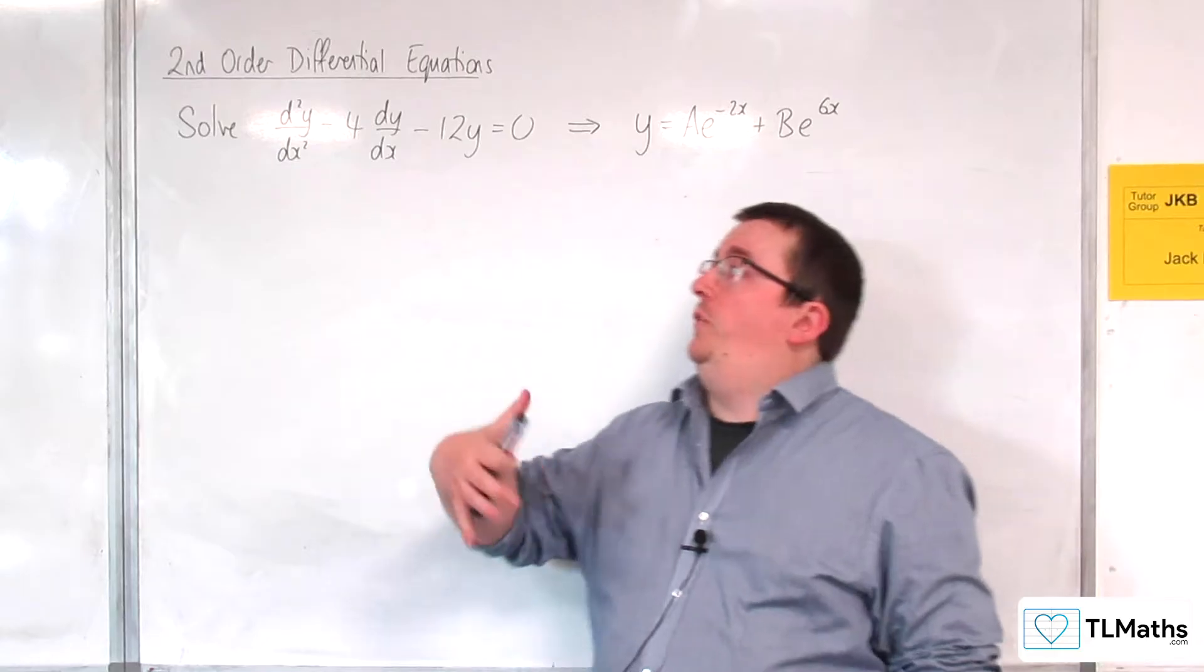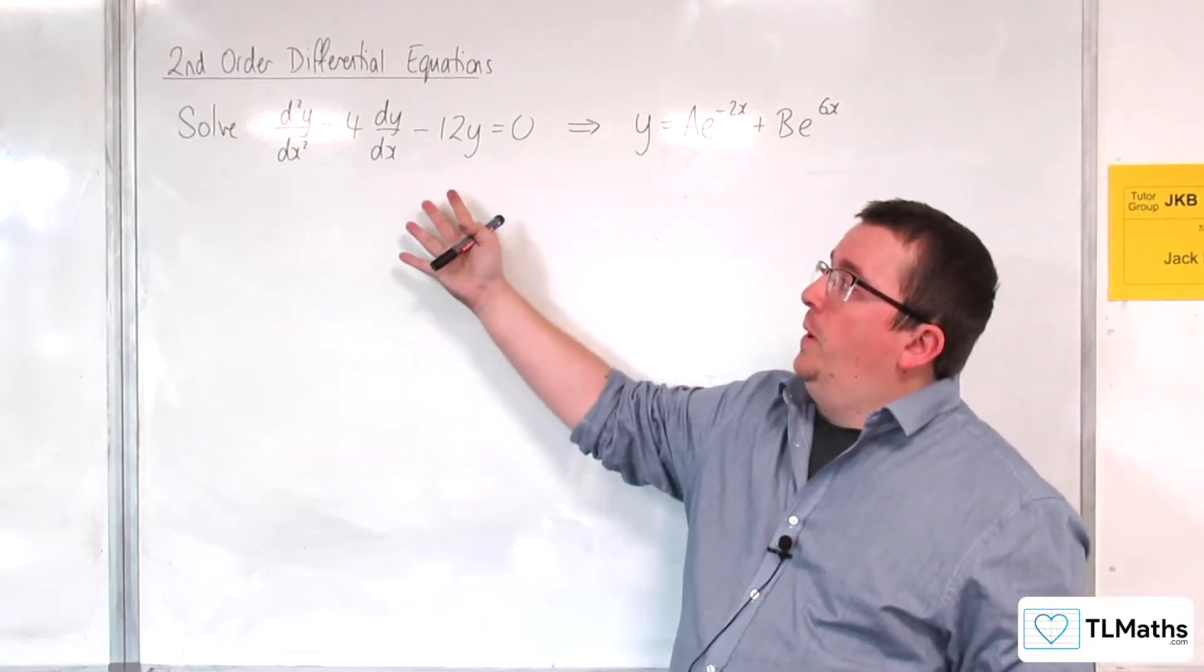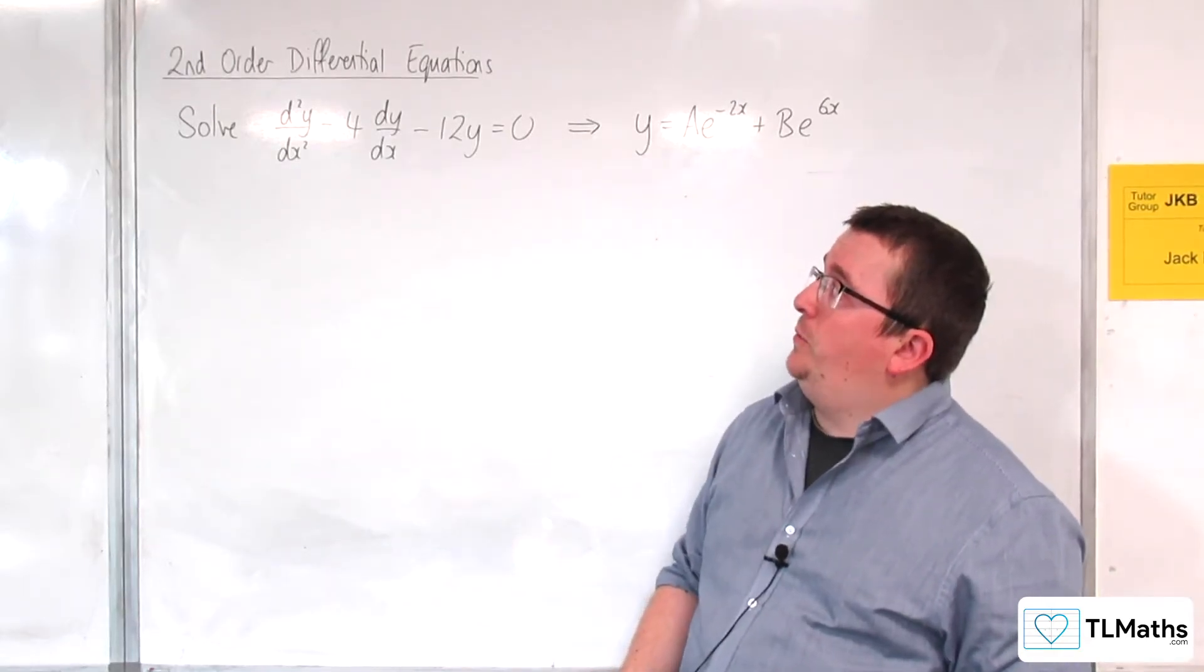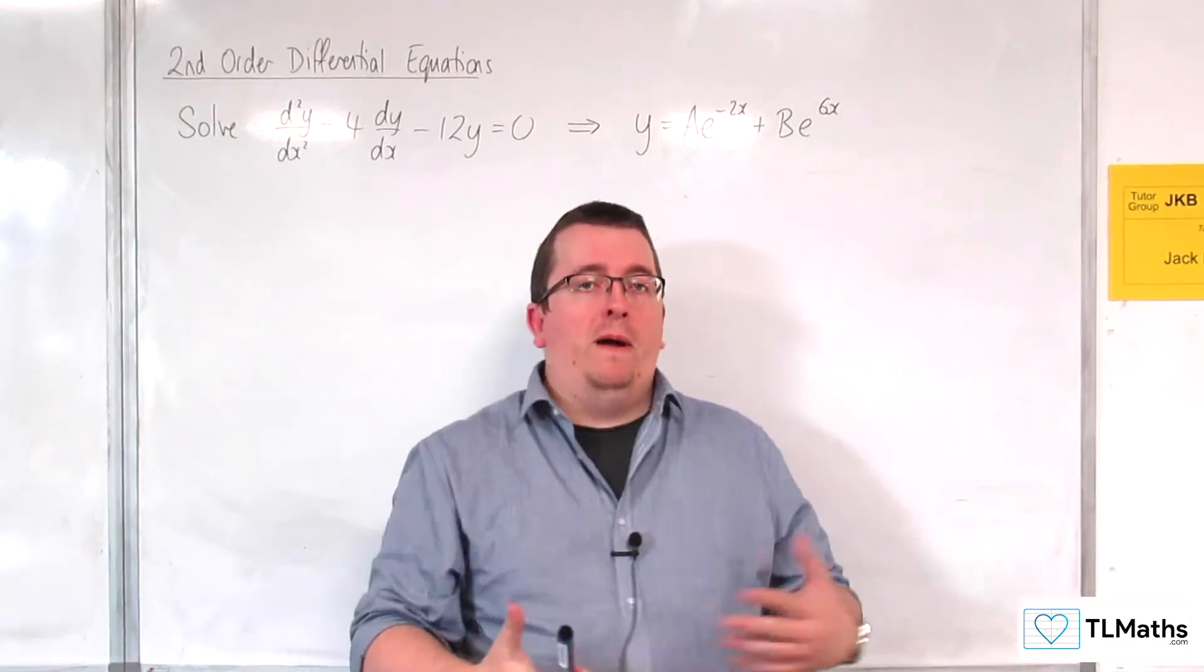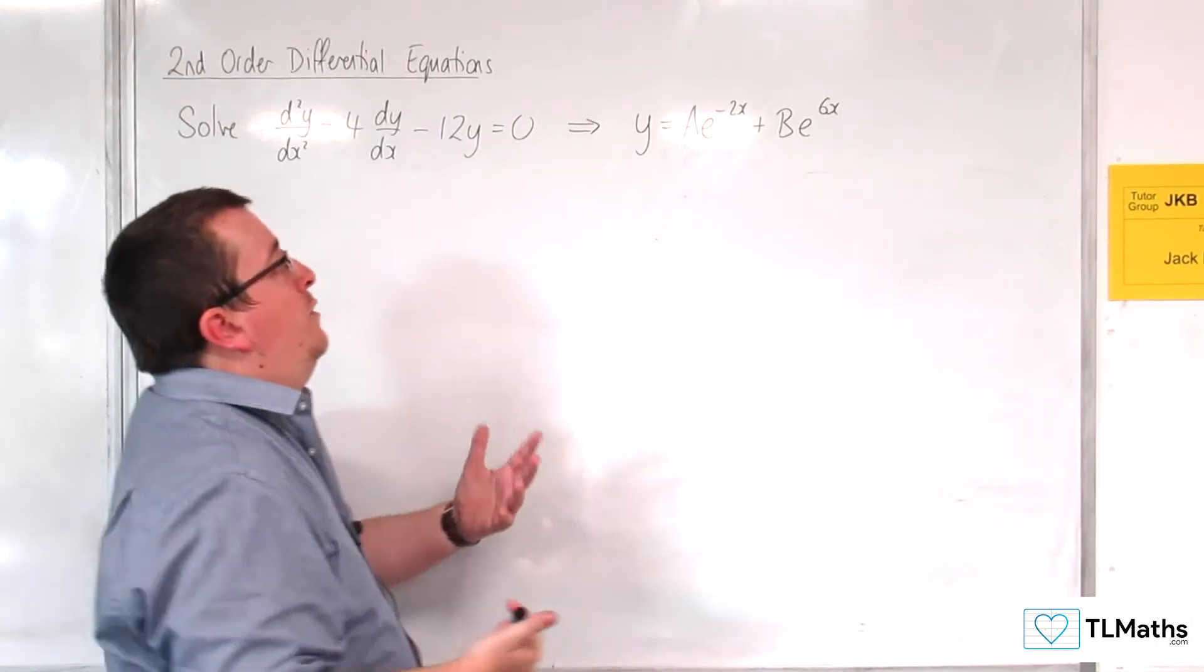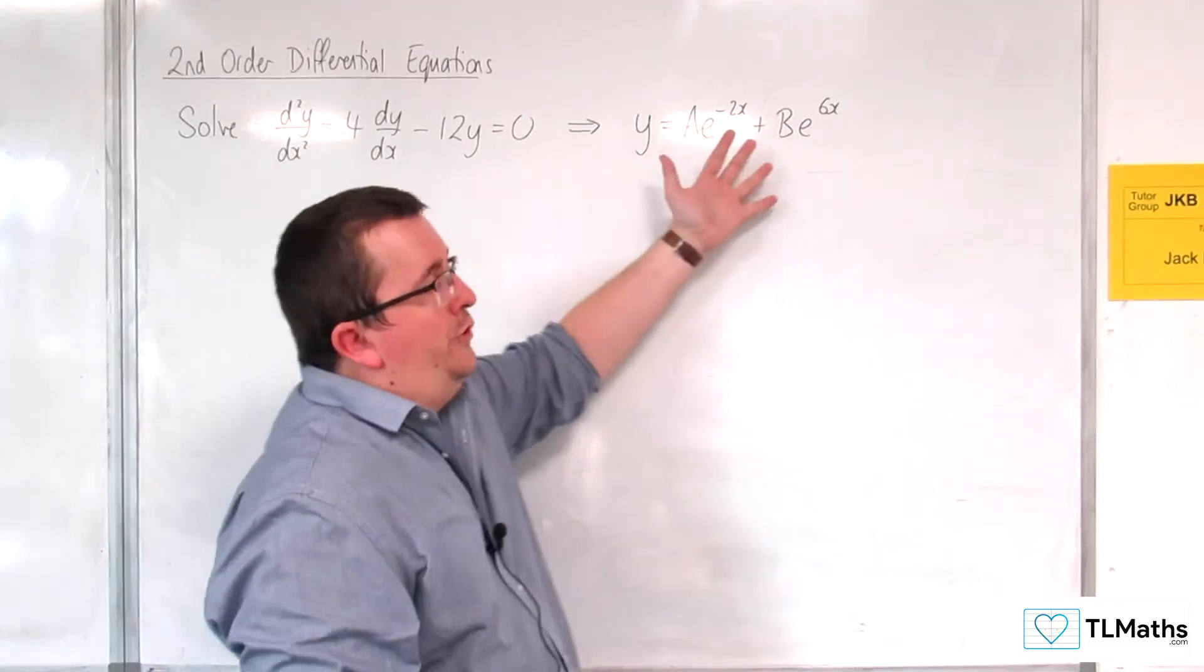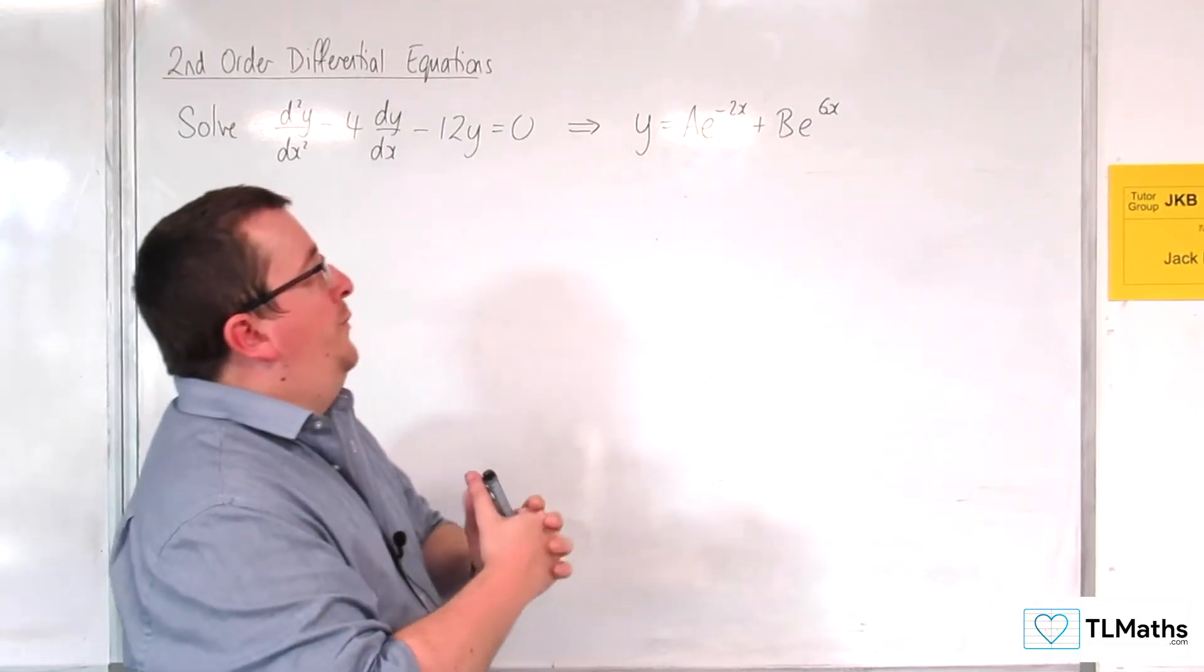In the previous video, we solved d²y/dx² - 4(dy/dx) - 12y = 0 using a long formal method, and we arrived at this general solution: y = ae^(-2x) + be^(6x).